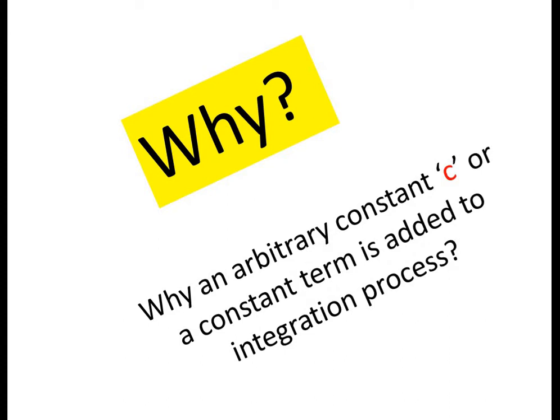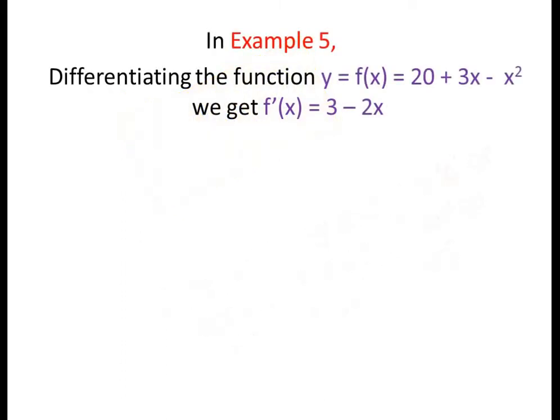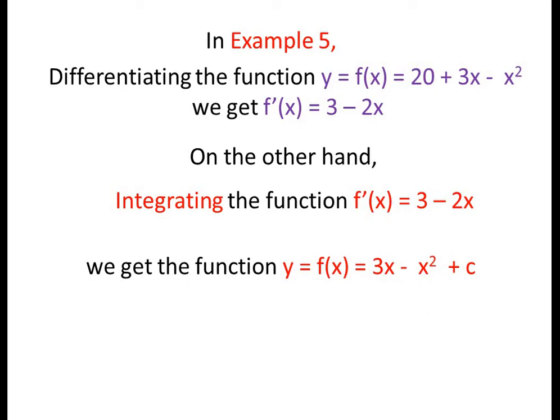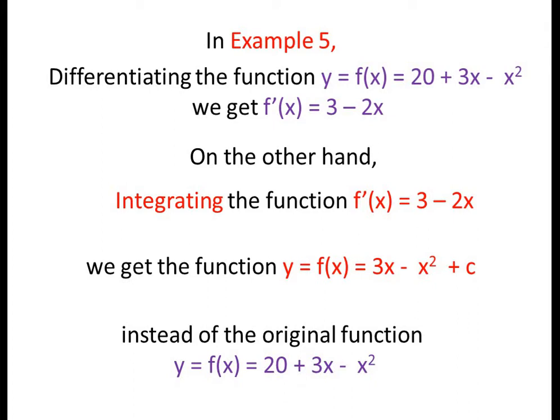Why is an arbitrary constant c added in the integration process? In Example 5, differentiating the function y = 20 + 2x - x², we get f'(x) = 3 - 2x. On the other hand, integrating f'(x) = 3 - 2x, we get y = 2x - x² + c, instead of the original function y = 20 + 2x - x².